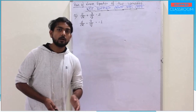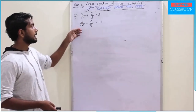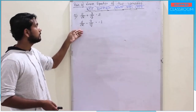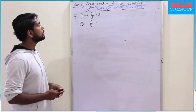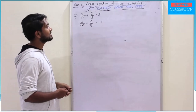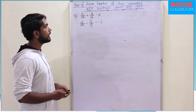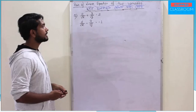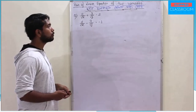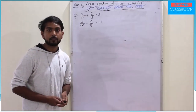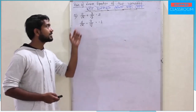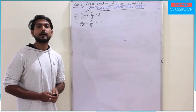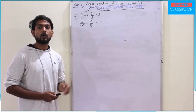I will make a problem: 2 by root x plus 3 by root y equal to 2, and 4 by root x minus 9 by root y equal to 1.